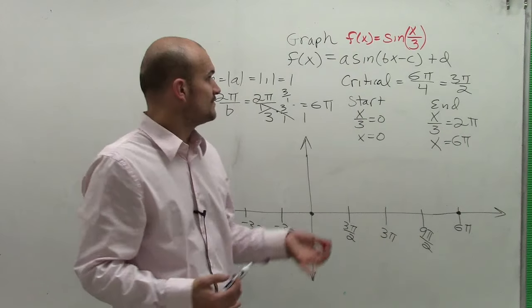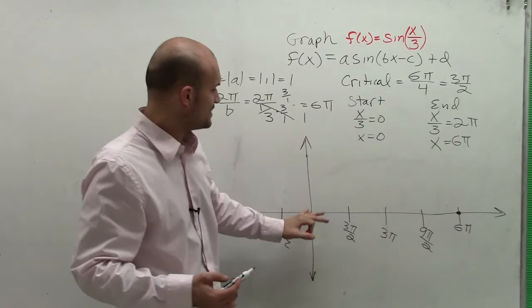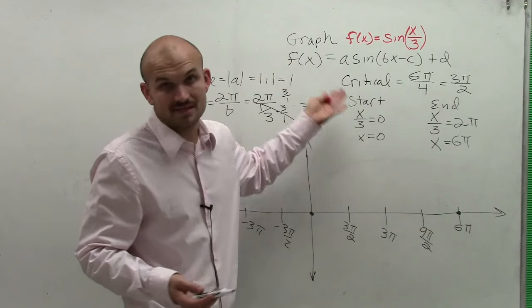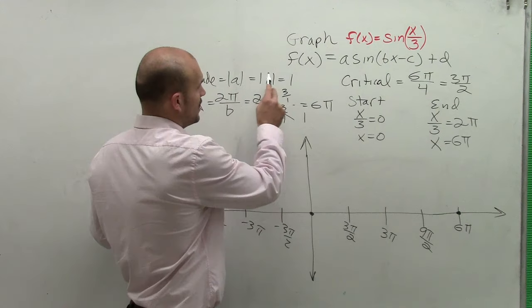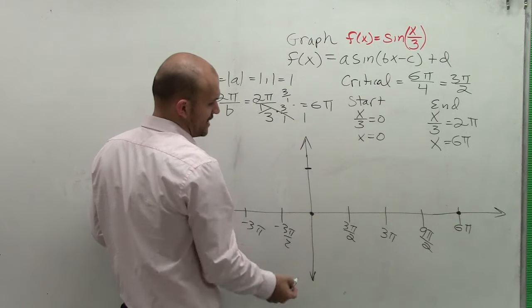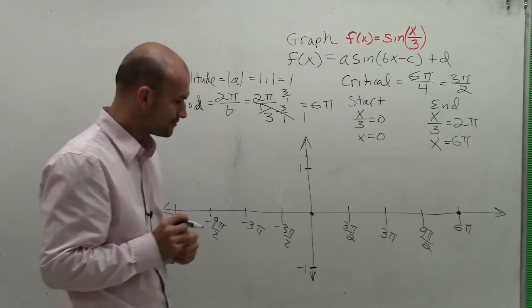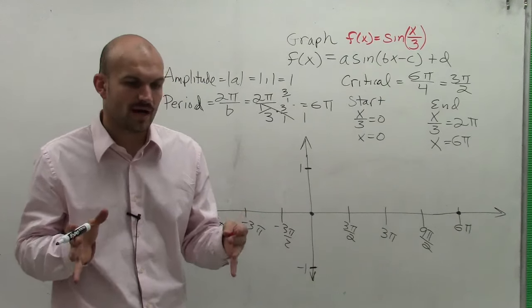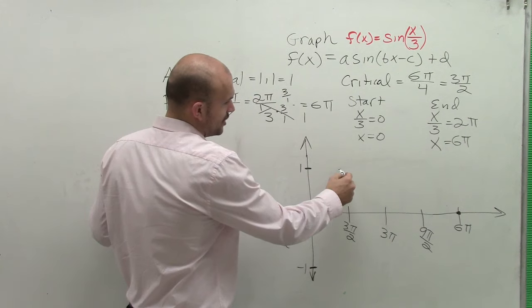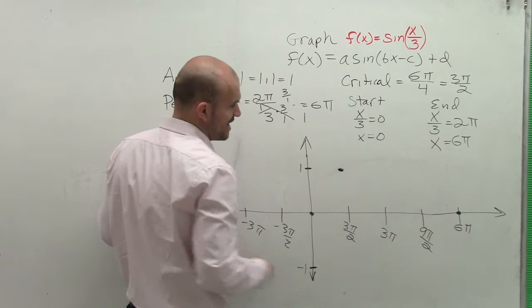So to graph this, if you remember, the sine function always immediately goes up unless there's a reflection. And we look at our amplitude. Our amplitude tells me there's going to be a maximum and a minimum at 1 and negative 1. So if we kind of remember what our parent function looks like for the sine graph, what we can do is we know that our first critical point is going to be our maximum.